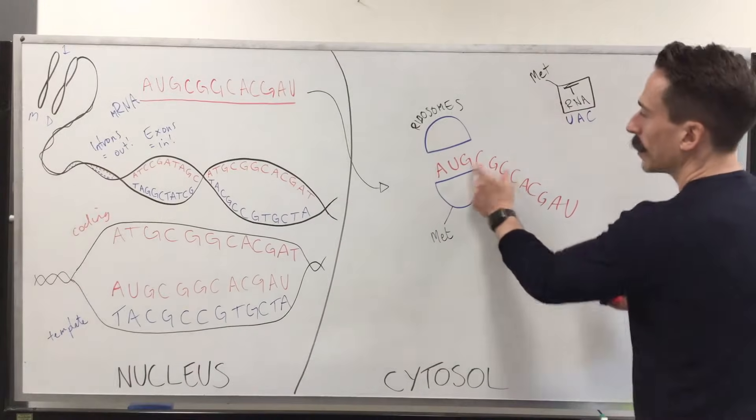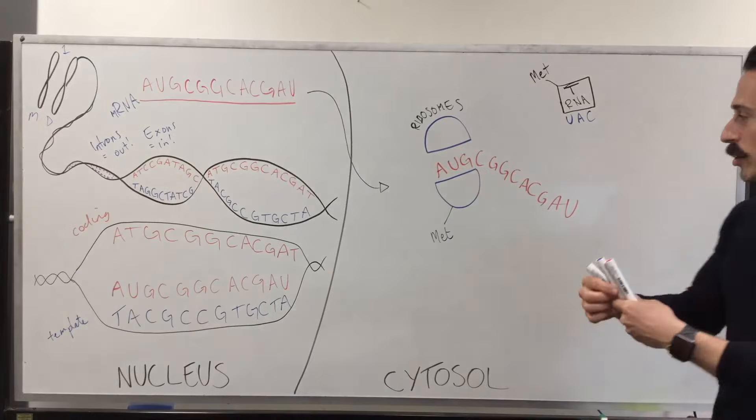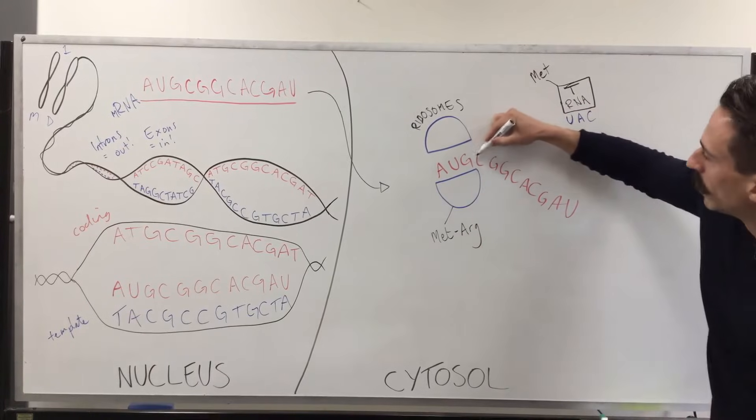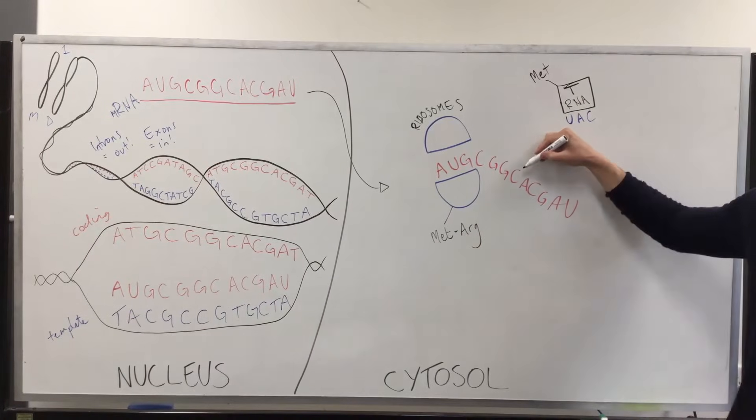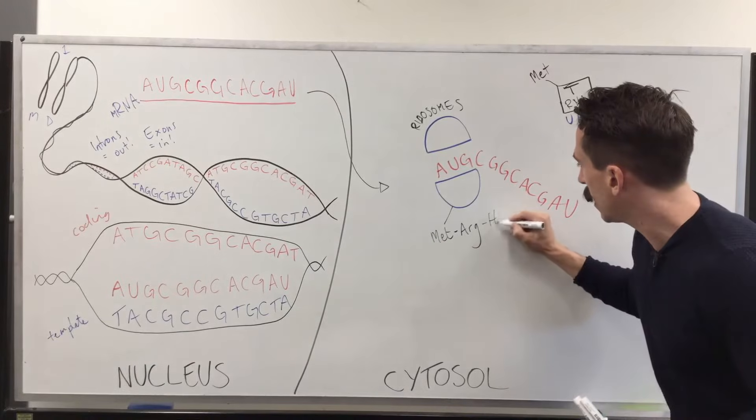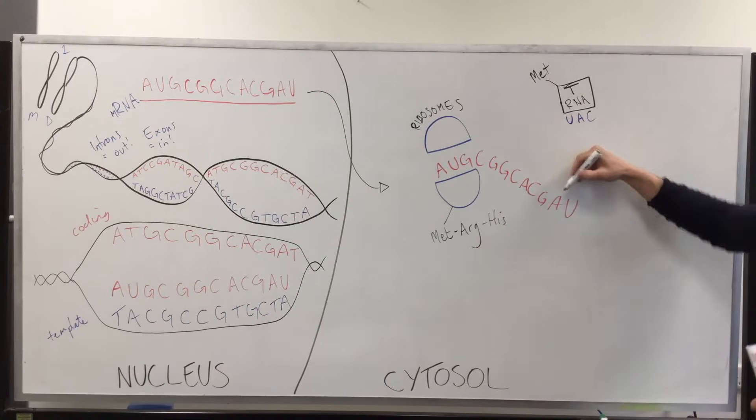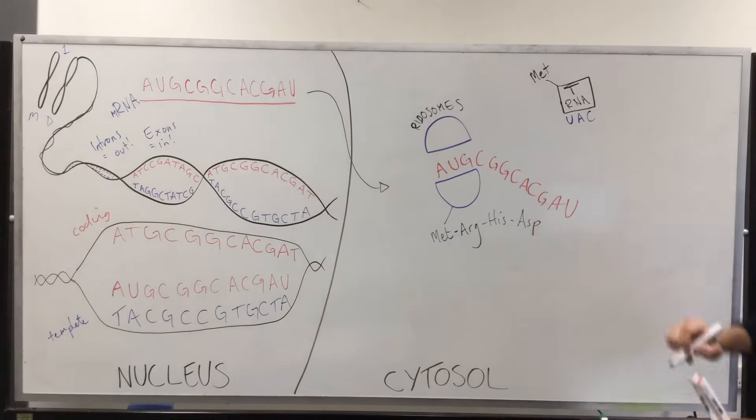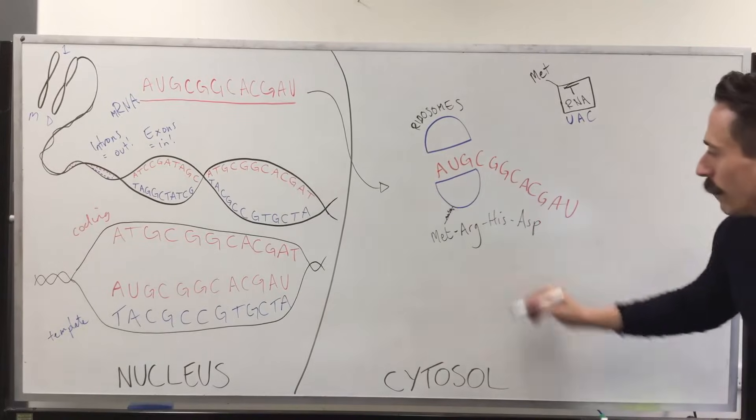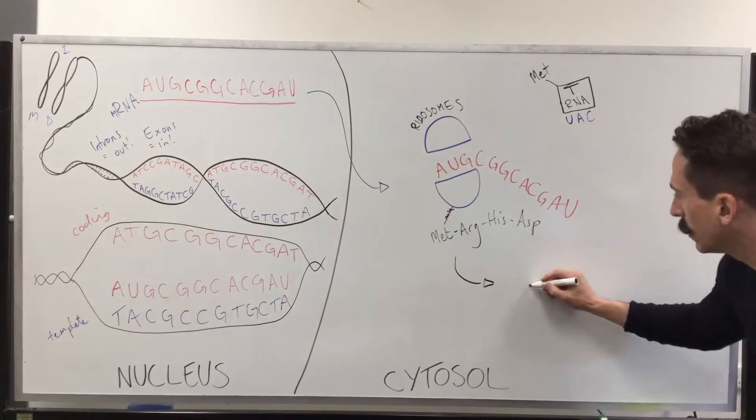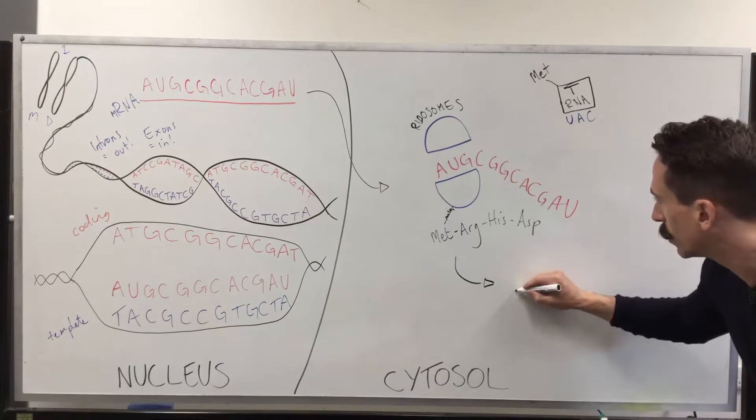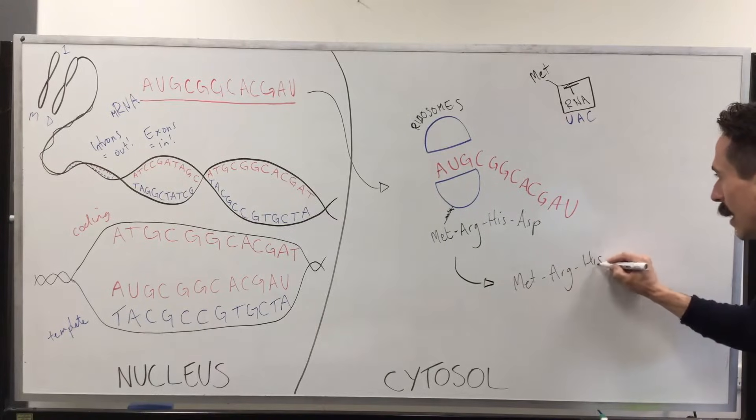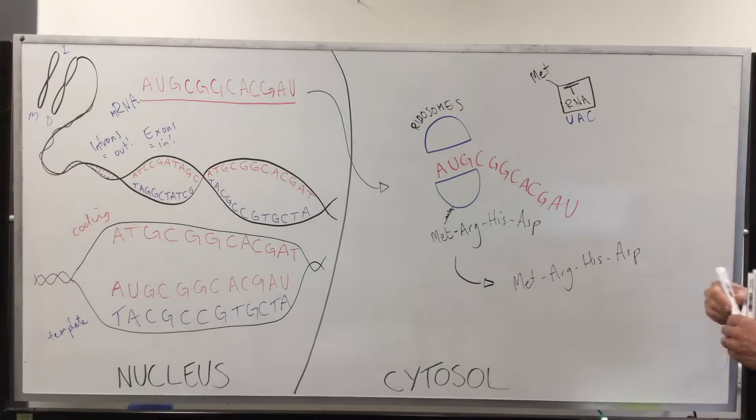And so, what happens is ribosome reads the three, this comes along and it spits out a methionine. Then, this is going to read the next three, C-G-G. And C-G-G is going to read arginine. And it snaps it on next to the methionine. So, it's read A-U-G, C-G-G. It then reads C-A-C, which is histidine. And then it reads G-A-U, which is aspartic acid. And then it's finished. This snaps off. And now what we have is a strand of amino acids, which is methionine, arginine, histidine, and aspartic acid, just as an example.